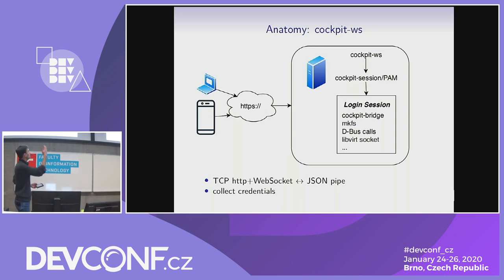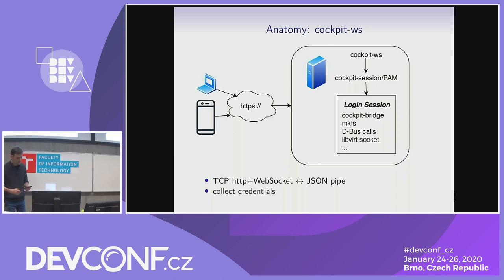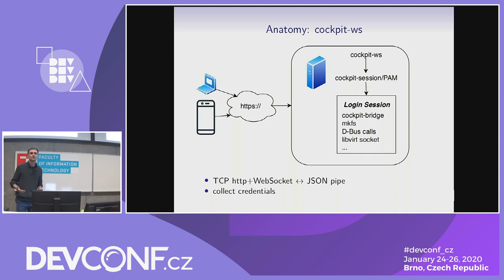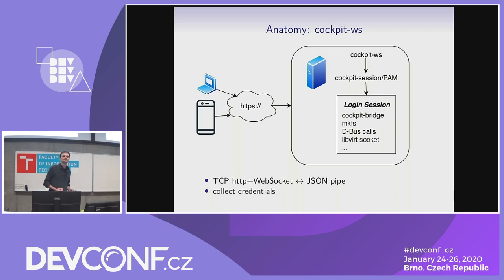First, at the beginning of the chain is the browser. Browsers only speak HTTP and WebSocket — not the things we need to administer a Linux machine. So we always need some kind of web server somewhere, called Cockpit WS. This is where HTTPS requests land. The web server's purpose is to collect credentials from the user — by providing a login page and collecting the password, negotiating a Kerberos session, or asking the client for a TLS certificate commonly provided by smart cards. Then it delivers HTML and JavaScript content to the browser.